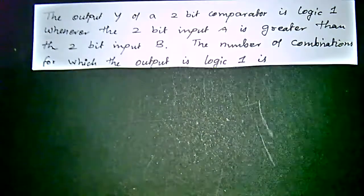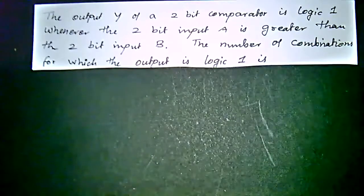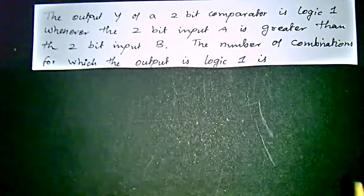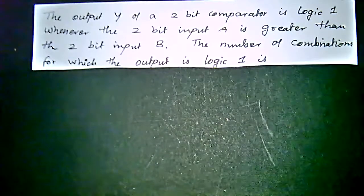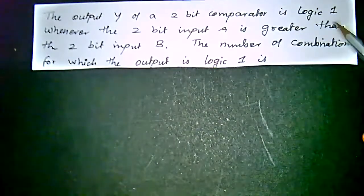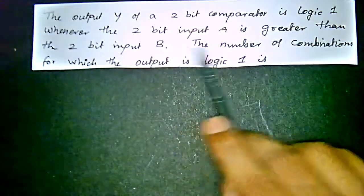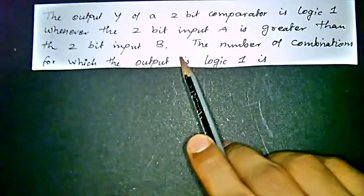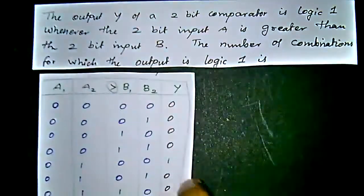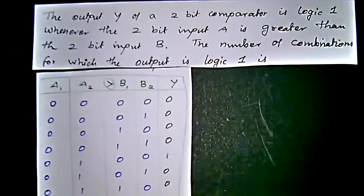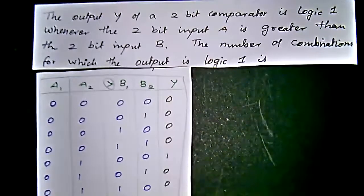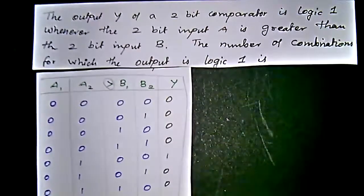They asked about a 2-bit comparator with A1, A0 and B1, B0. The output will be 1 when the A value is greater than B. We have to make a table where A1, A0 gets output value 1 whenever A1, A0 is greater than B1, B0.